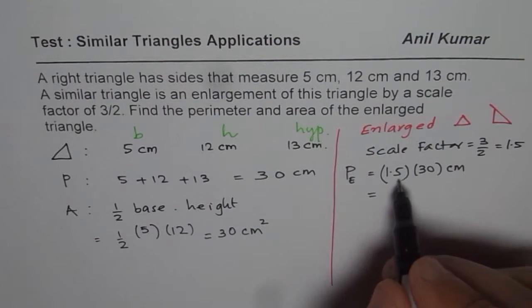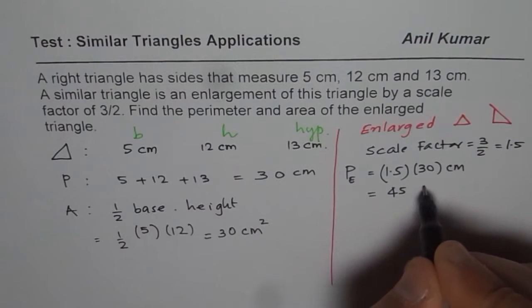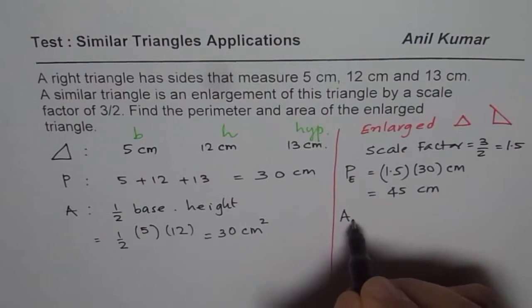And write down our answer. So 1.5 times 30 means 45. 30 plus half of it, 45 centimeters. How about the area of this enlarged triangle?